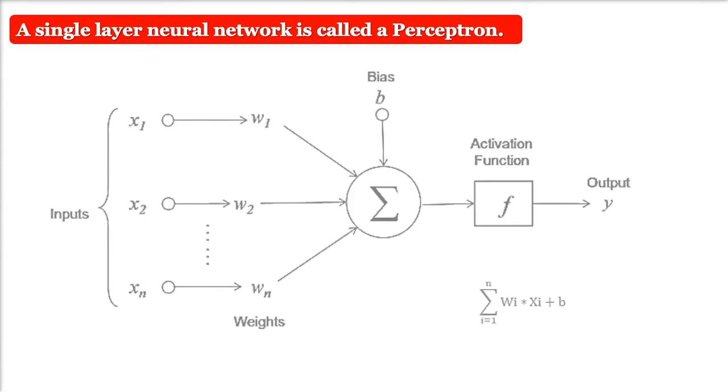This is a very important diagram because this is how you will understand the computation. This diagram represents the general model of an ANN which is inspired by a biological neuron, and this is called a perceptron.